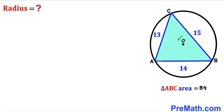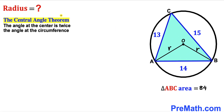In the next step I connect center O with points A and B. OA and OB are both radii of the circle, so I'll label them lowercase r. Now let's recall the central angle theorem: the angle at the center is twice the angle at the circumference. So if the angle at the circumference is theta, the central angle AOB is 2 times theta.